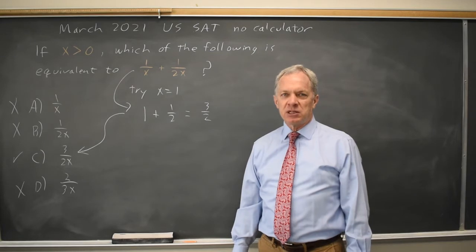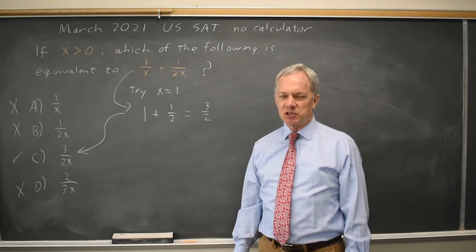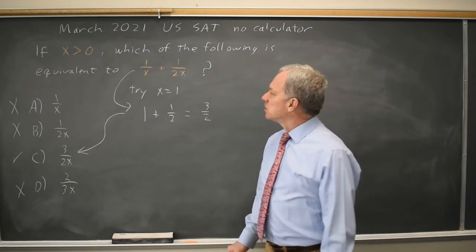So the only answer that could be correct is choice C, because that's the only answer that matches for x equals 1. I like this approach because it's arithmetic, and we're really good at arithmetic compared to algebra, but we should also know the algebra. So let's do it correctly.